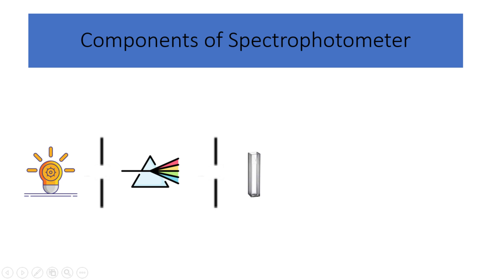Sample compartment. The sample compartment is where the sample is placed for analysis. It usually consists of a cuvette, a transparent container that holds the sample. The cuvette is designed to transmit light through the sample, allowing its interaction with the sample to be measured.